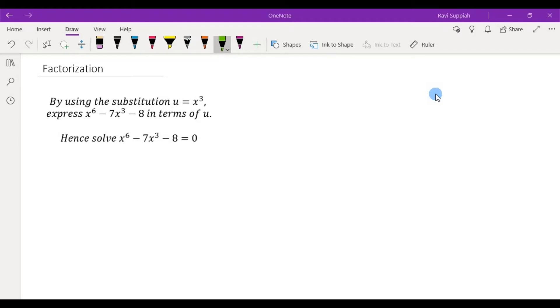Alright, so let's see. I'll rewrite this expression: x to the power of 6 minus 7x cubed minus 8. So what we are supposed to do is take u equals x cubed and substitute into this expression here. The first thing we have to do is make sure that in this expression we can see the x cubed terms clearly, and we can actually achieve that by using the indices rule over here.